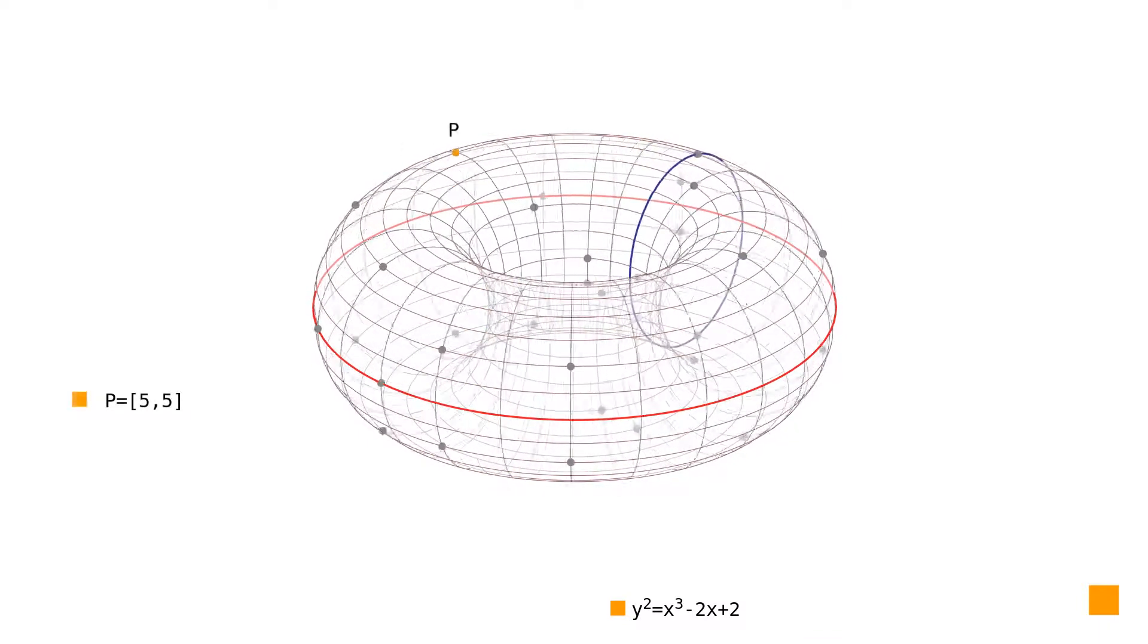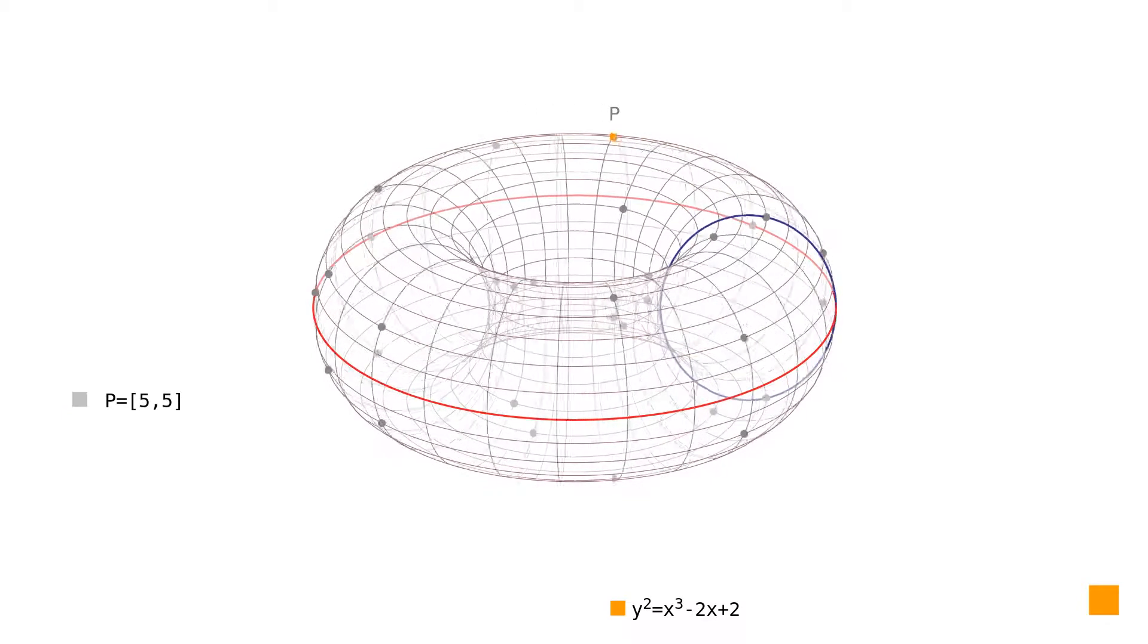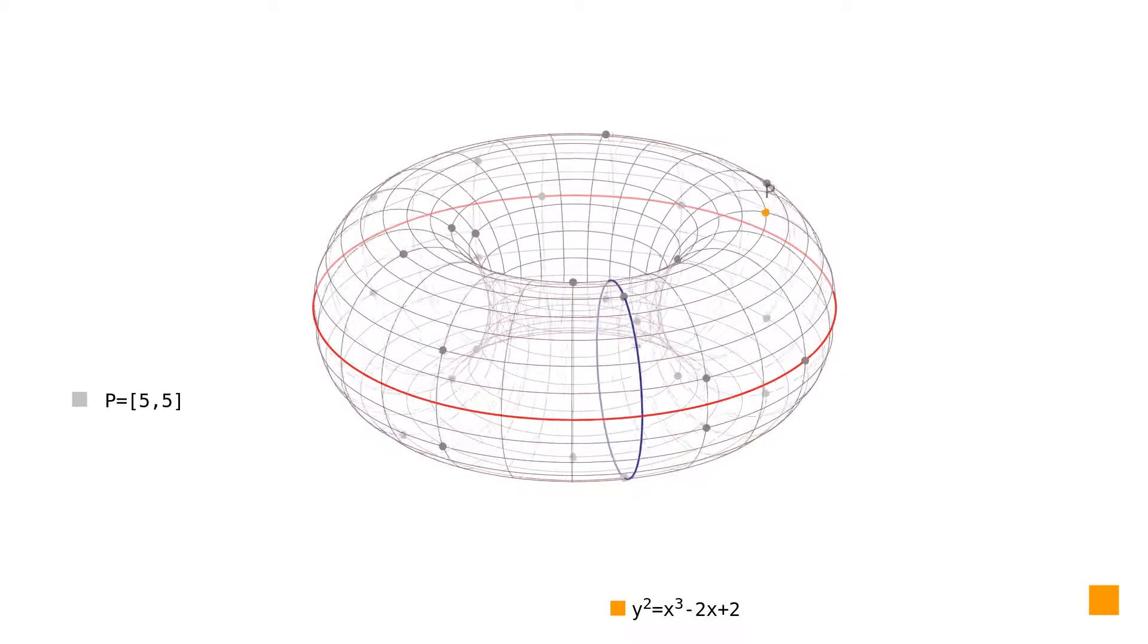We choose a point P from the set of rational points of a given elliptic curve over a given finite field and start adding it to itself.